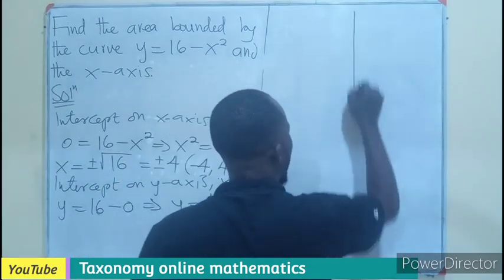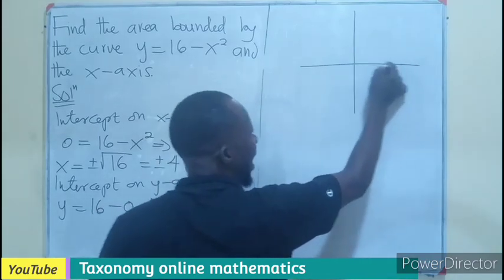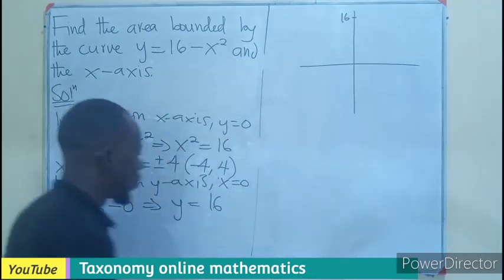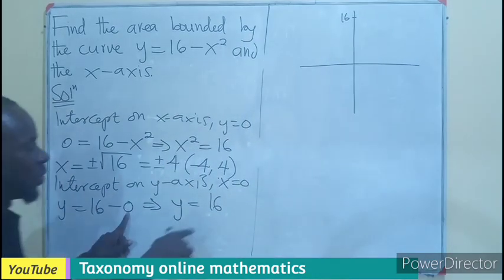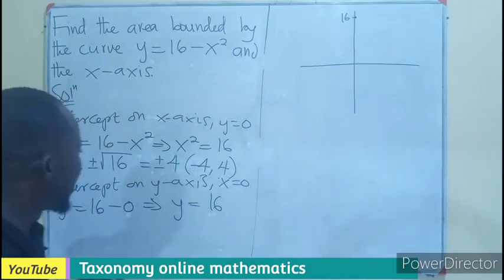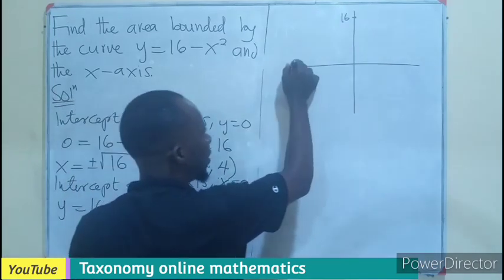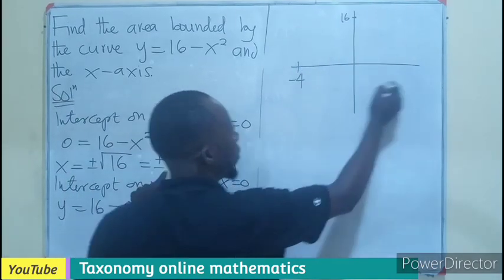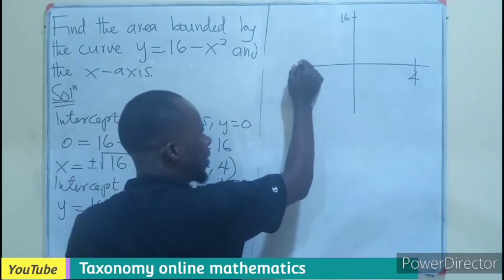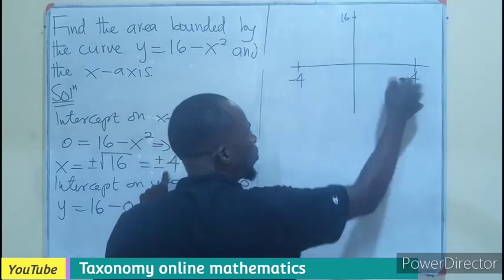So in sketching that graph, we know the x axis will be here, y axis. So we are going to have 16. When x is 0, y is 16. That means the graph is going to pass there. Then when y is also 0, x is either negative 4 or positive 4. So the graph must pass this point, this point and this point.